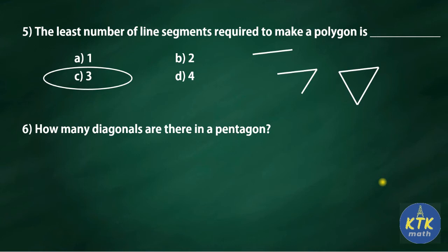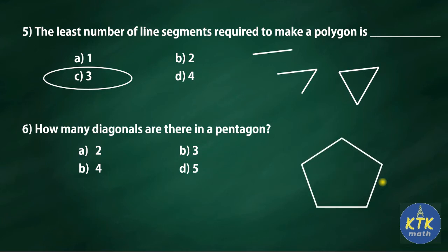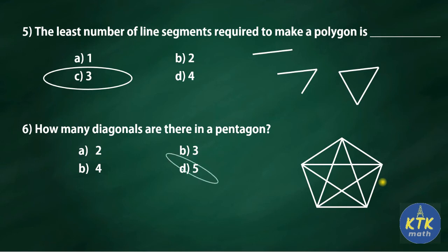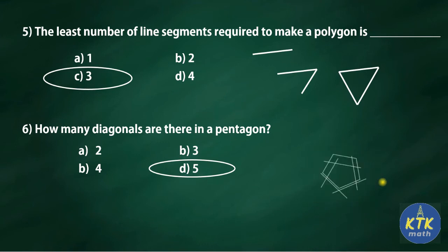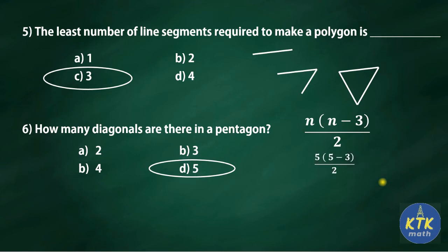Question six: how many diagonals are there in a pentagon? A pentagon is a five-sided polygon. Options are two, three, four, or five. Method one — draw a pentagon and draw all the diagonals: one, two, three, four, five. That gives five diagonals. Method two — use the formula n(n−3)/2, where n is the number of sides. Substituting n = 5: 5 × (5−3)/2 = 5 × 2/2 = 5. Answer: five diagonals.